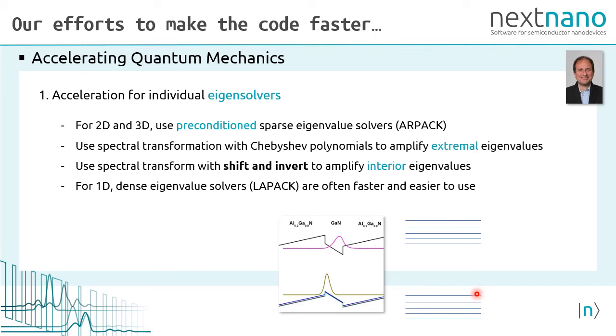For 8 band k dot p, we are calculating the interior eigenvalues around the band gap. For this, we use a shift and invert method. For 1D simulations, it turns out that dense eigenvalue solvers of the LAPACK package are often faster and easier to use.